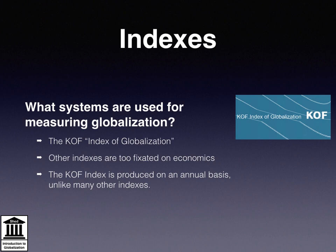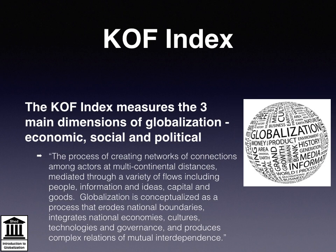As argued throughout this course, whilst economics is the key component of globalisation, it is not the only show in town. Where these other indexes do consider other aspects of globalisation, they are produced only on a sporadic basis, whereas the COF index is produced on an annual basis, although usually using data which is two to three years out of date. The COF index measures the three main dimensions of globalisation: economic, social and political.